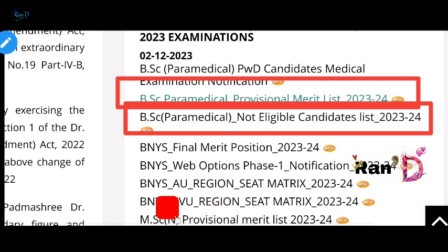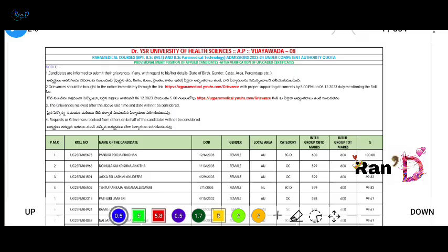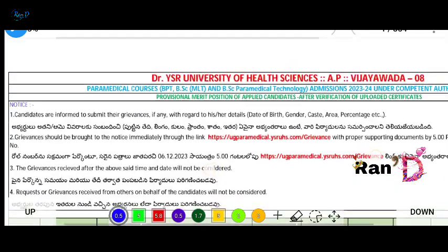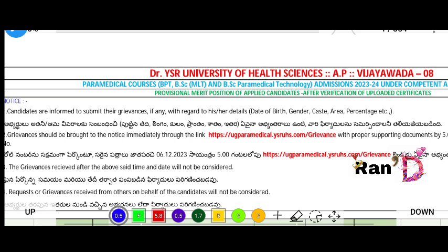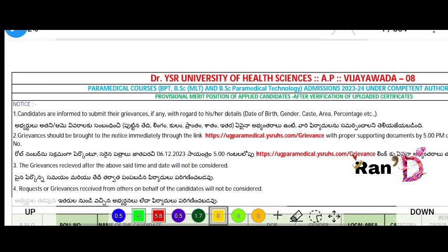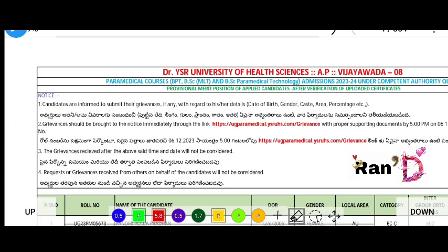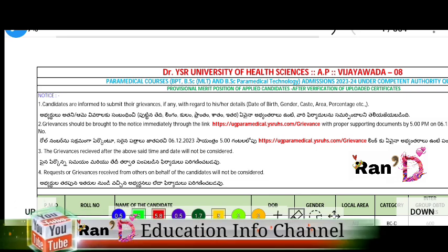Here we have the option for the not-eligible list. If you want to subscribe to my channel and click the bell icon, I will guide you. Let me open it for the first time and walk you through this.